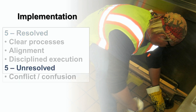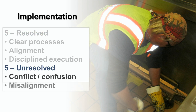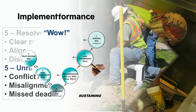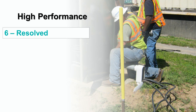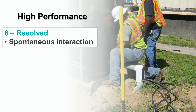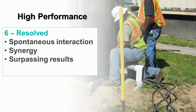When implementation challenges are unresolved, you will see conflict and confusion, misalignment, and missed deadlines. Step 6: High Performance. When people on a team trust one another, the quality of the relationships flows over into high performance, which elevates the entire team. When methods are mastered, a team can begin to change its goals and flexibly respond to the environment. The team can say 'Wow!' and surpass expectations. When high performance challenges are resolved, you will see spontaneous interaction, synergy, and surpassing results.